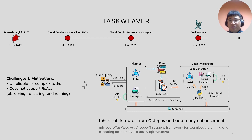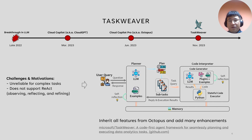We inherited most of the good parts of Octopus and added new features to address the challenges. In this diagram, we show the architecture of Taskweaver. The most significant change is that we added a task planner. The planner decomposes the plan into sub-tasks and then passes them to the code interpreter. The code interpreter generates code for each sub-task and executes it. The execution result is then passed back to the planner, which can then decide the next step based on the result. We have released Taskweaver as an open-source project on GitHub in November last year.